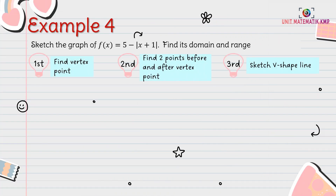First example: sketch the graph of f(x) equals 5 minus modulus x plus 1. Find its domain and range. To find the vertex point, take x plus 1 and equate with 0, so x equals negative 1. Substitute to find Y: Y equals 5 minus modulus of (negative 1 plus 1), giving Y equals 5. The vertex point is (negative 1, 5). Proceed to find another point before and after the vertex point.